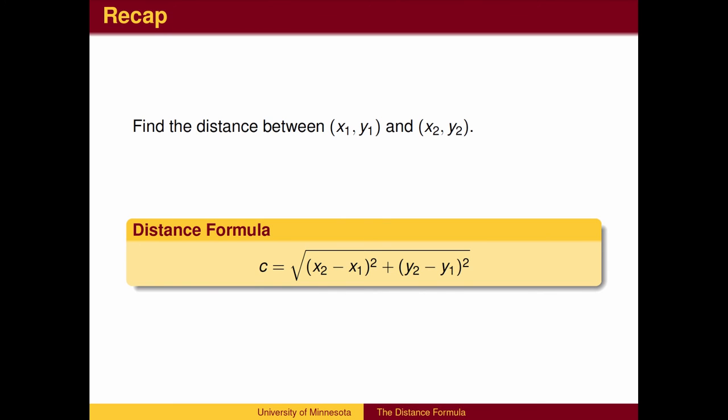To recap, the distance formula is the Pythagorean Theorem after taking a square root on both sides. The lengths of the x-leg and y-leg are found by subtracting coordinates.